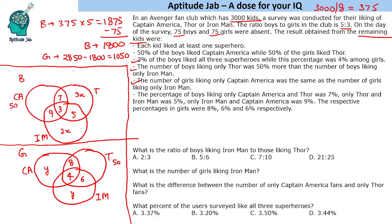Now we can solve since the total is 100%. For boys, Captain America circle is 50%. Summing the known parts: 7 + 5 + 9 + 3 = 24, leaving 50 + 2x + 3x = 100 — wait, working it through: 55 + 5x = 100, so 5x = 45, giving x = 9. Therefore only Iron Man = 2x = 18 and only Thor = 3x = 27.